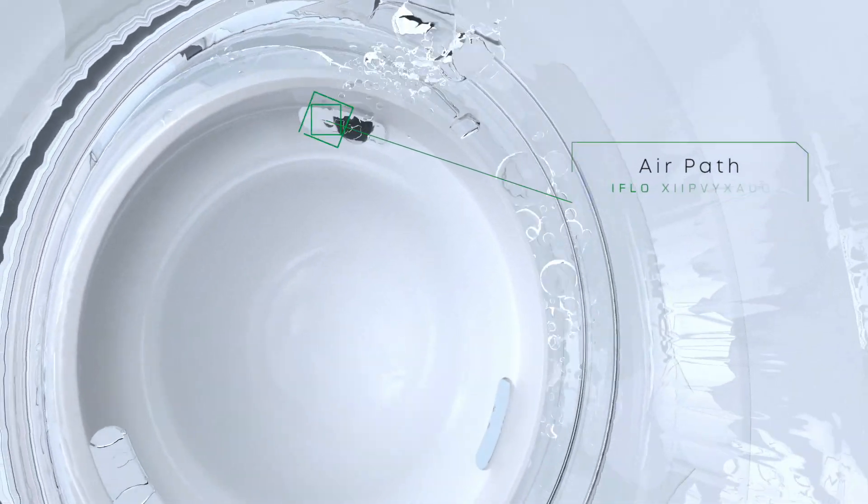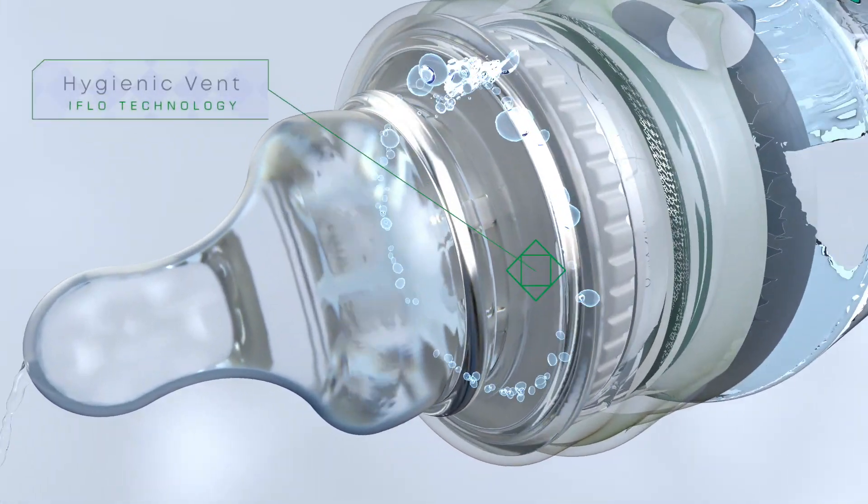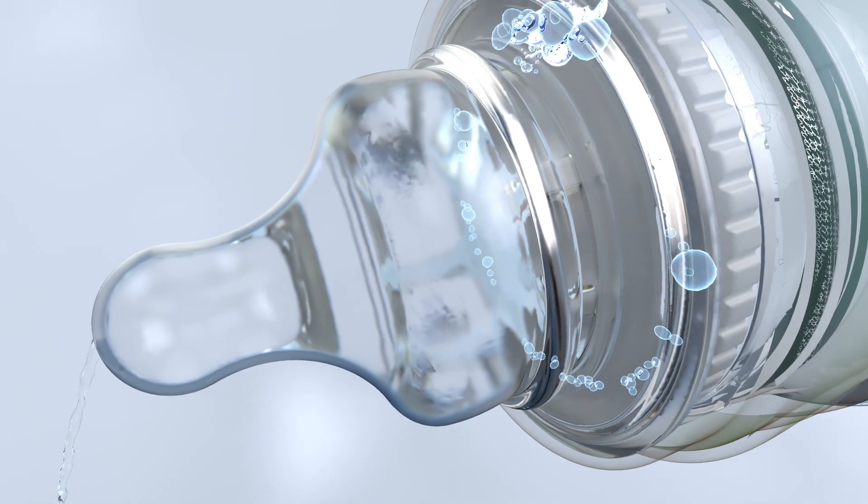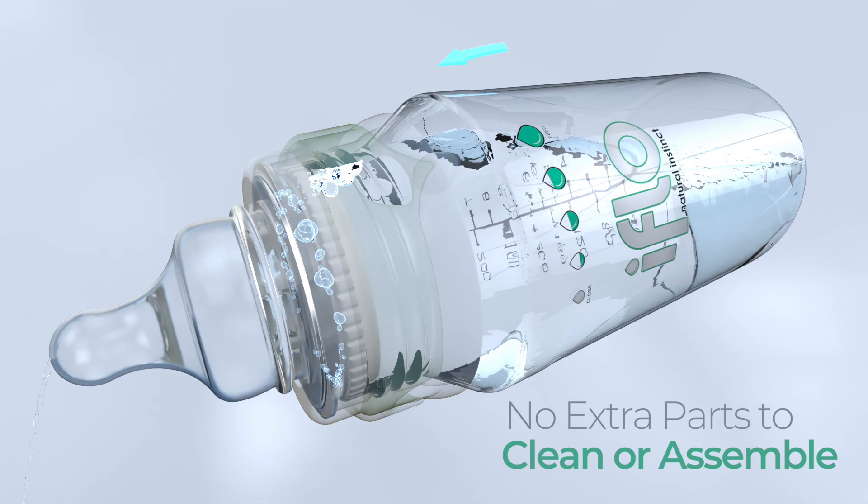How does it work? The pressure regulator prevents teat pressurizing. The hygienic ventilation relieves vacuum pressure, and you don't need extra parts to clean or assemble.